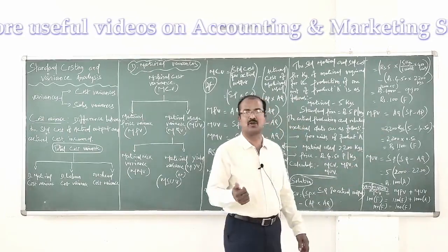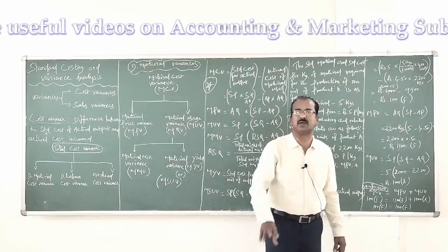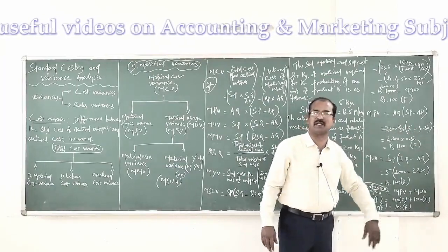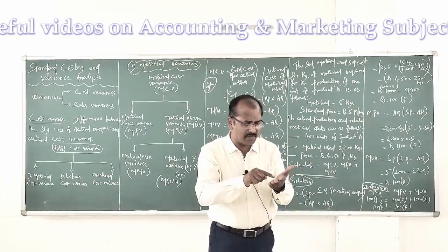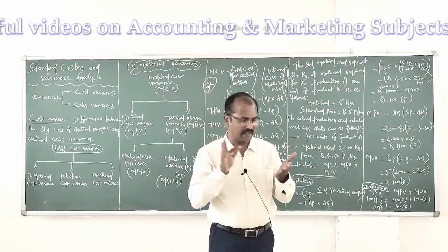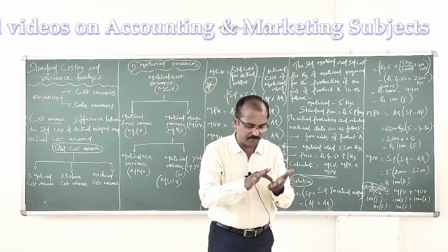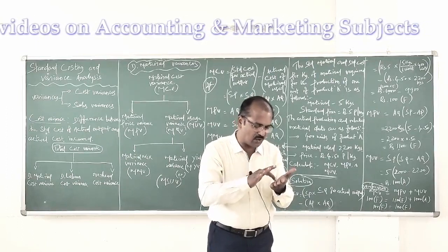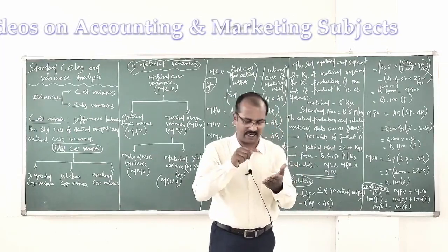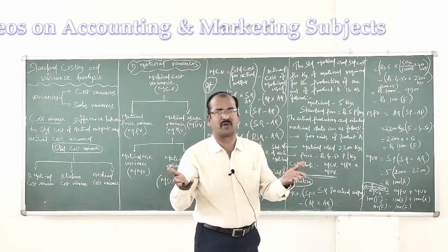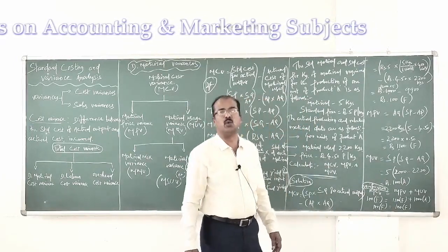Material price variance formula: actual quantity × (standard price − actual price). Actual quantity = 2200 kg; standard price = 5 rupees; actual price = 4.50 rupees. Since actual price is less than standard price, the organization saves 0.50 rupees per kg. MPV = 2200 × 0.50 = 1100 rupees favorable.